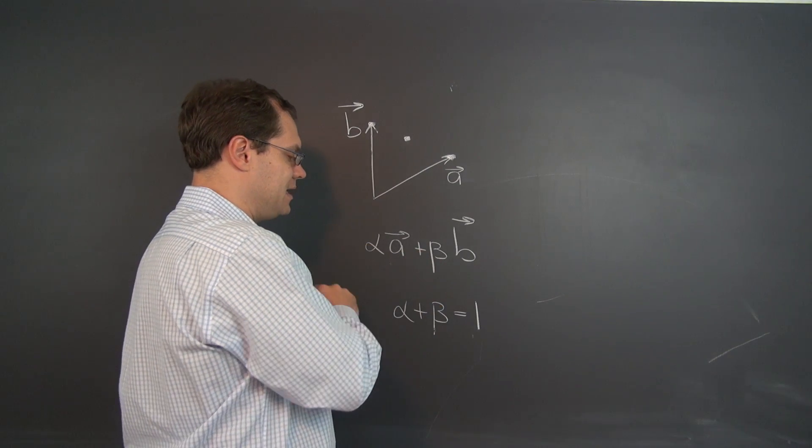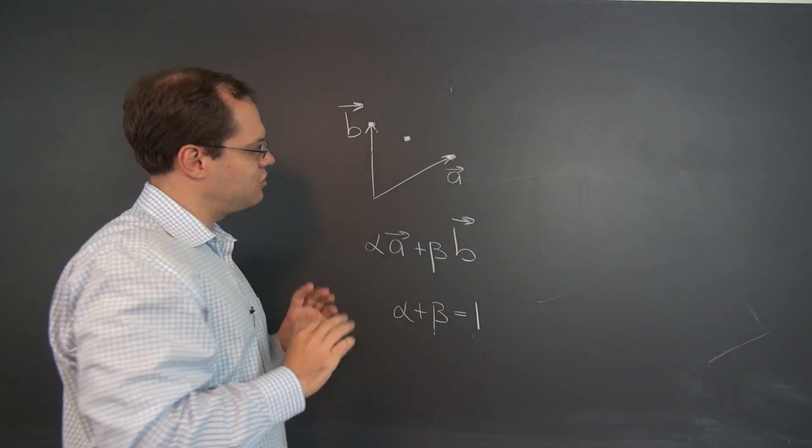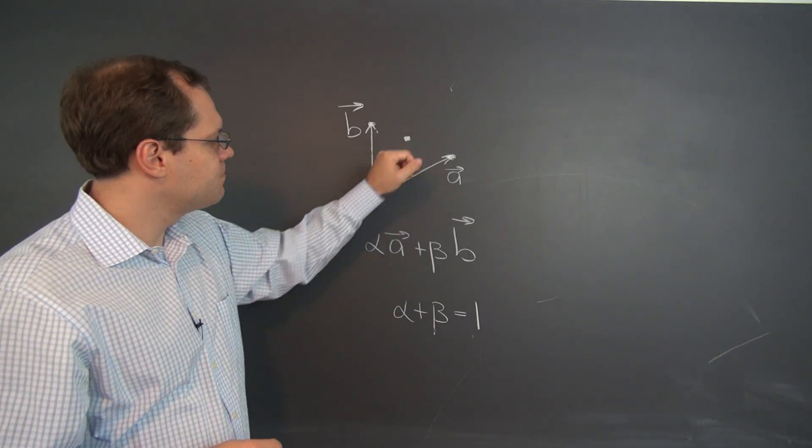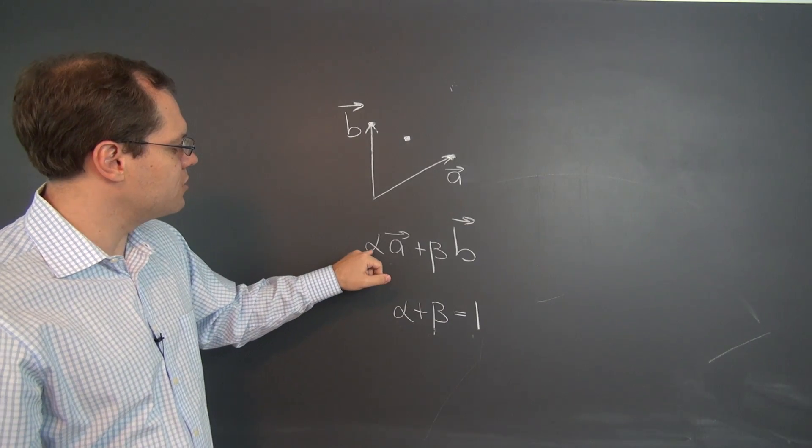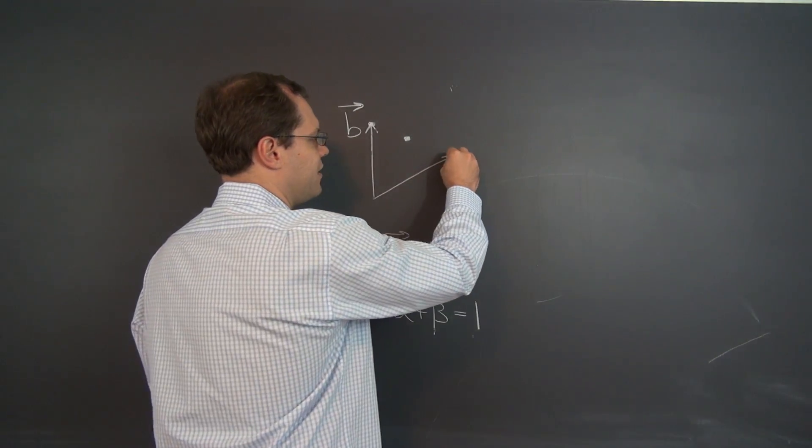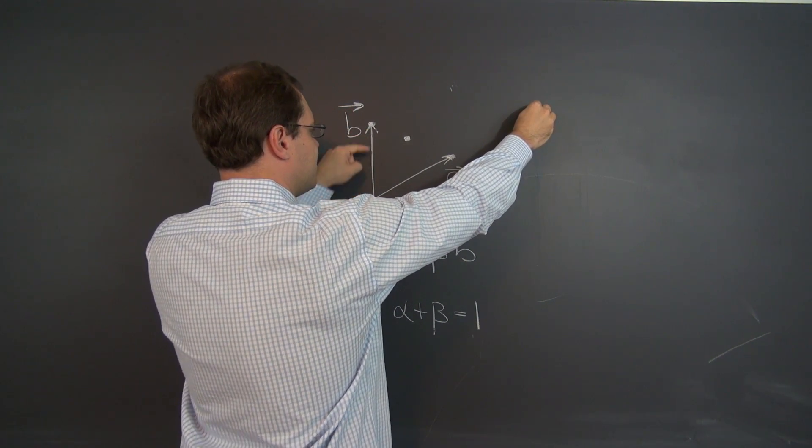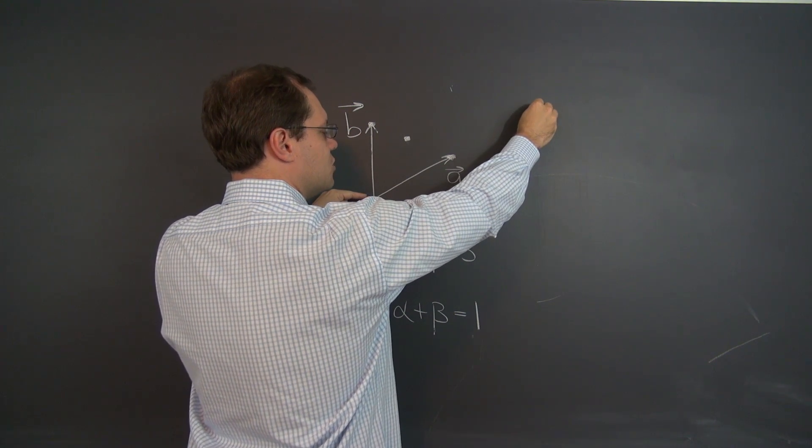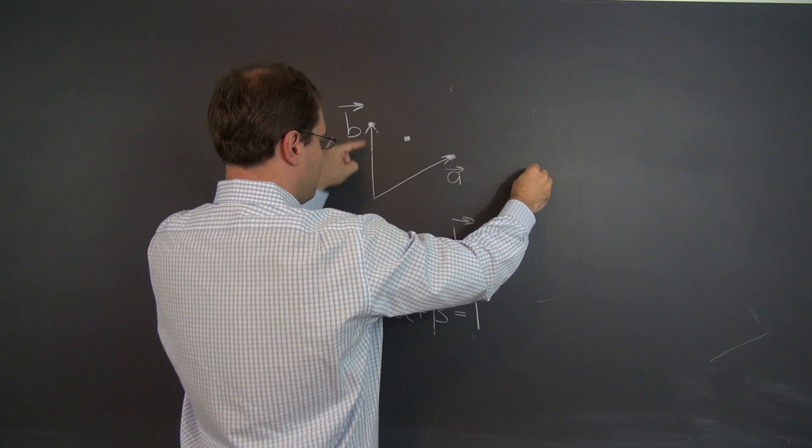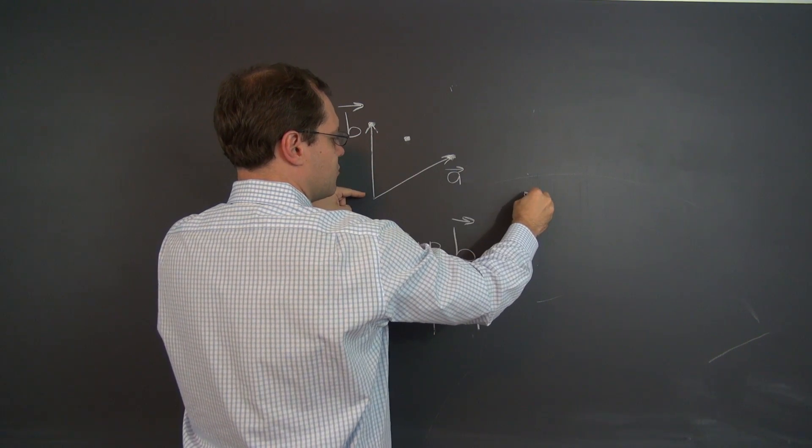So geometrically, it corresponds to being exactly midway between A and B. Whereas before, alpha equals 1 and beta equals 0, so I'd take all of A and none of B, and we were right at A. So it all makes sense both algebraically and geometrically. Let's throw in a couple more points. How about 2 and negative 1? So 1 of A, 2 of A, and now from 2 of A, we have to subtract B, which is going from this, the tip of 2A, in the direction of minus B. And that lands us right here.